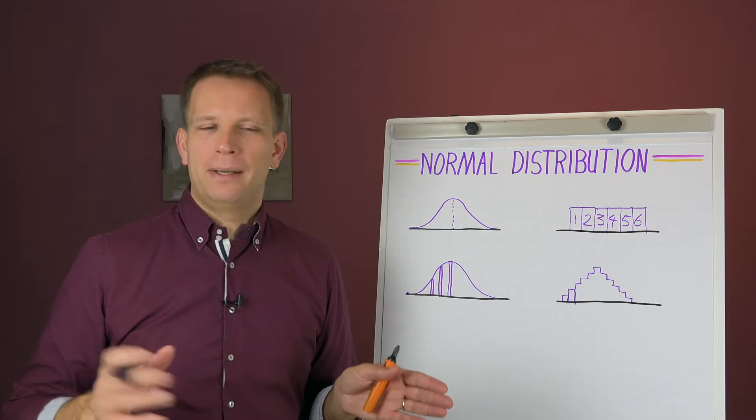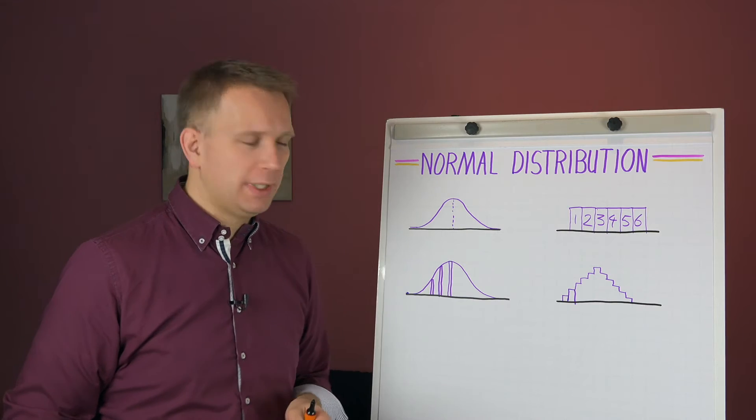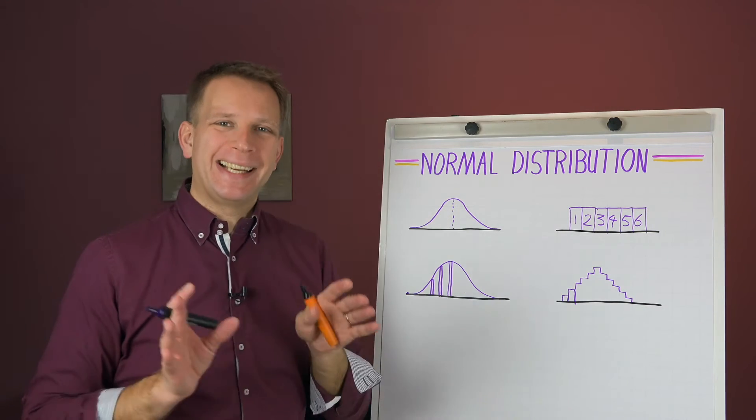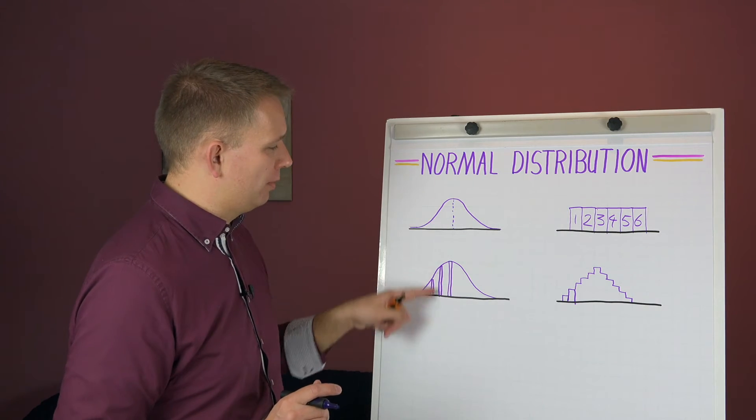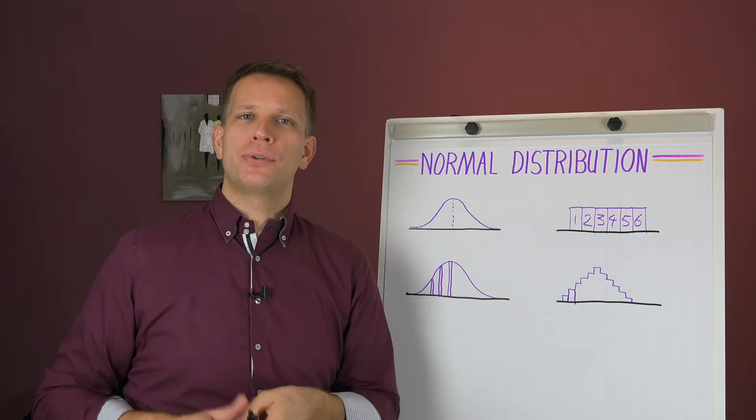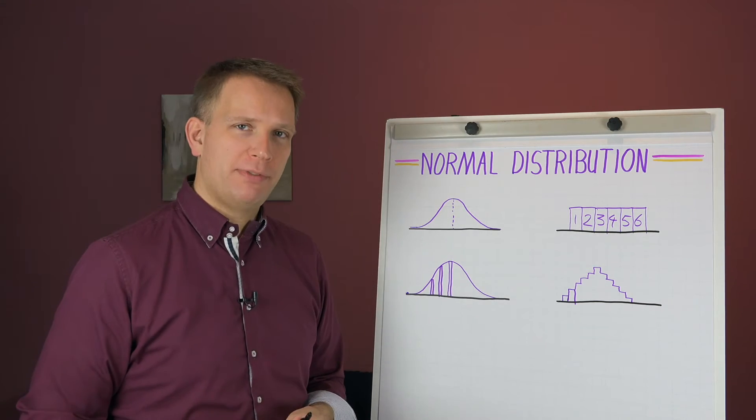And what we now get is that the distribution will start to look a lot more like that one. In fact, when we get over eight or so dice, you will basically have what we call a normal distribution. And this is also why it is called a normal distribution.